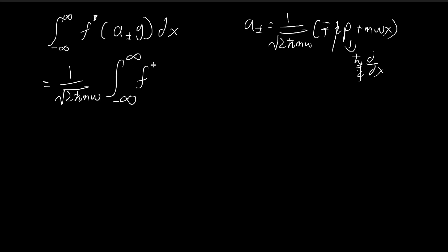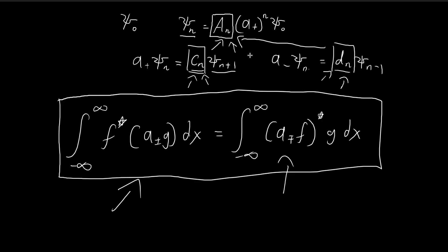So negative infinity to infinity, conjugate of f. So I pull these constants out, and then at the end we have minus plus h bar dg/dx plus m omega x g dx. So you can see that within this integral that we have, we have this expression in the middle. So we have this expression inside this integrand. So we're going to have to find a way to try to manipulate this into something else that would help us to arrive at this result.